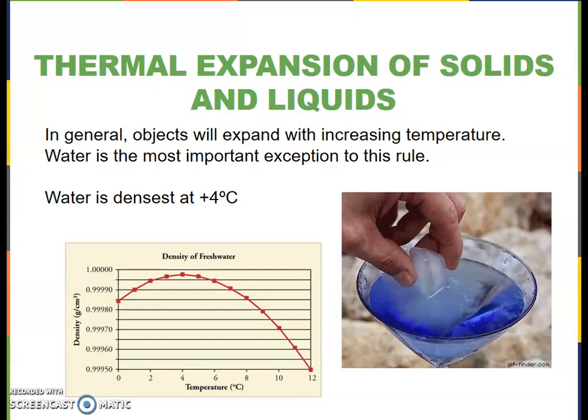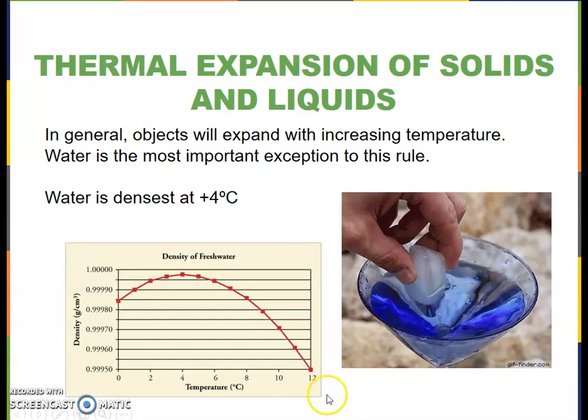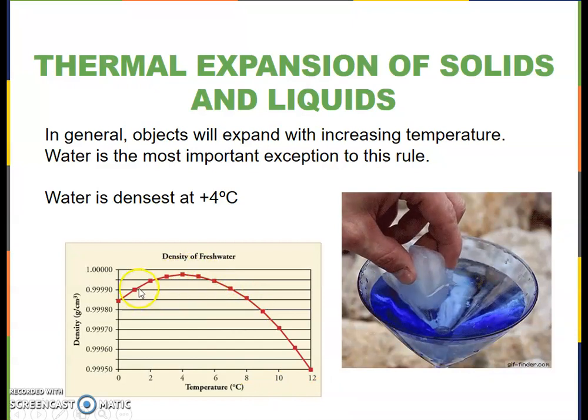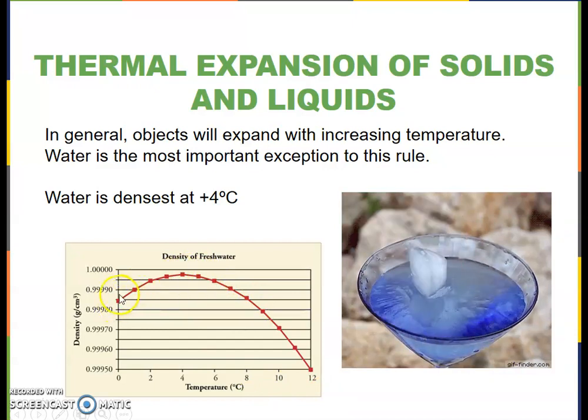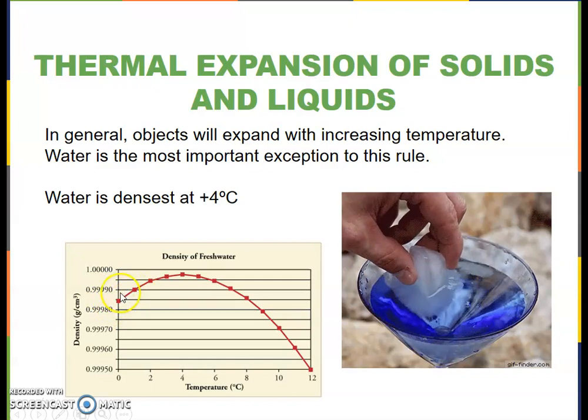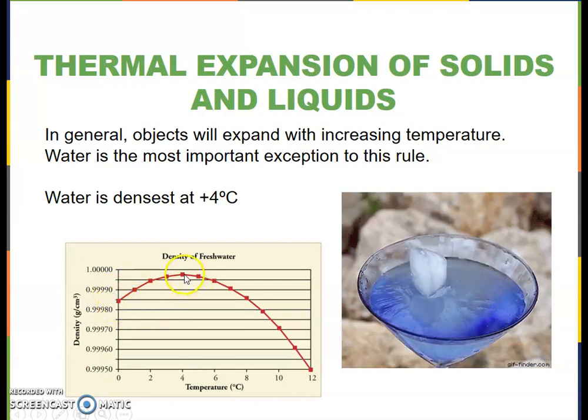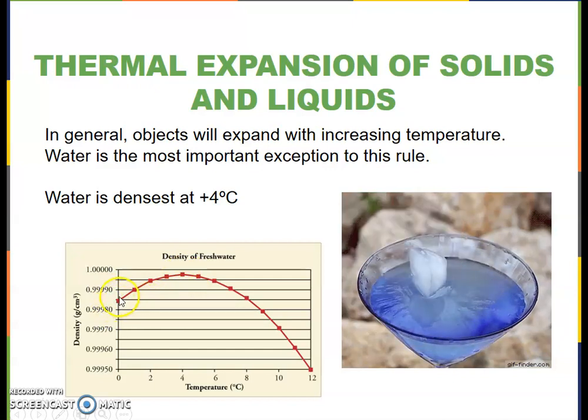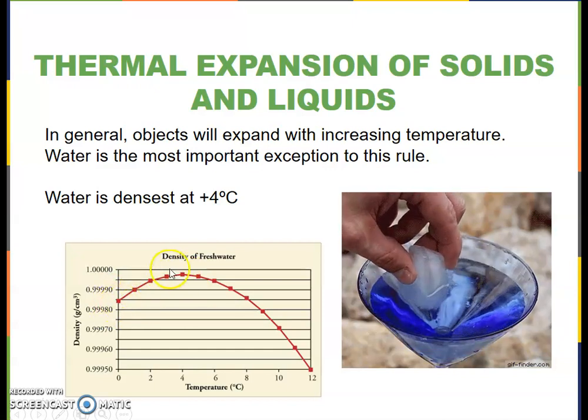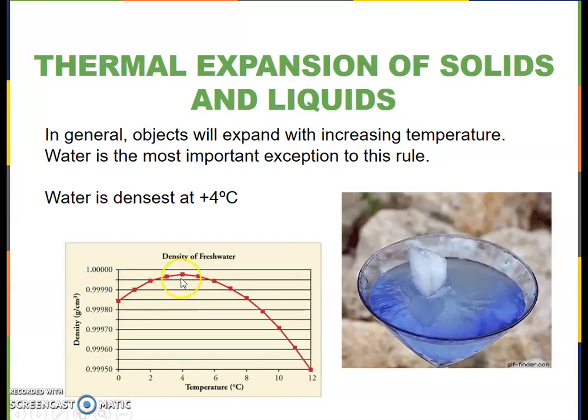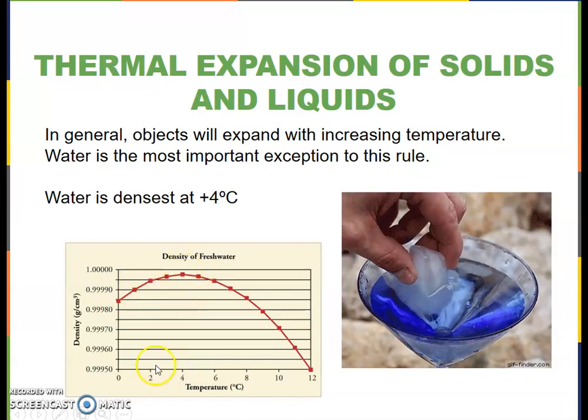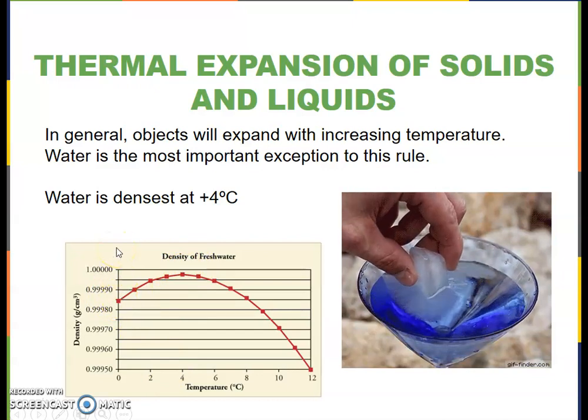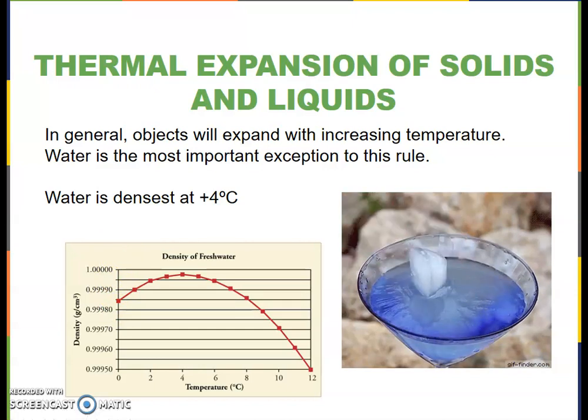So at 4 degrees Celsius, as the pond cools down or whatever you have cooling down, the cold water moves to the bottom. At 0 degrees Celsius, it's less dense than at 1 degree Celsius. So the more dense 1 degree Celsius is going to sink and the ice at 0 degrees Celsius is going to float. So what happens is ice floats on top of water.